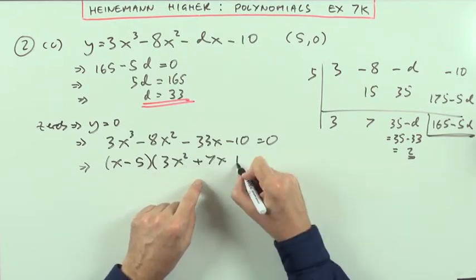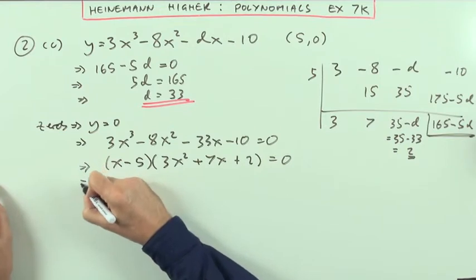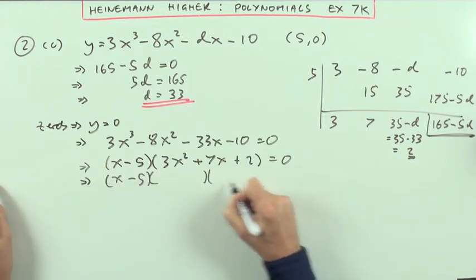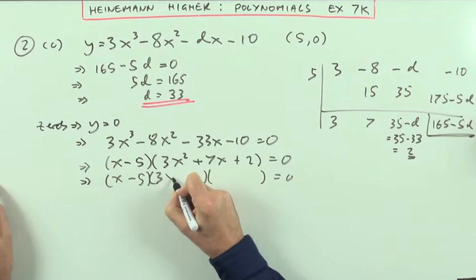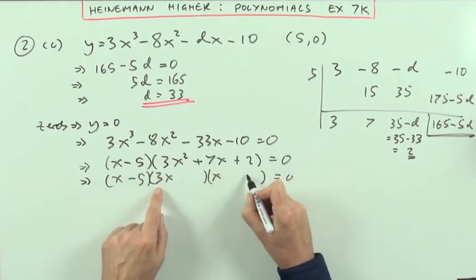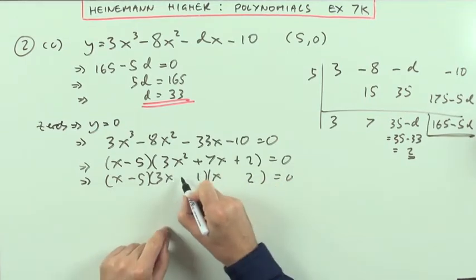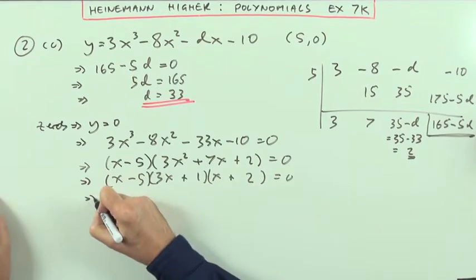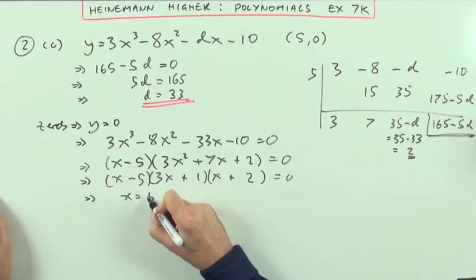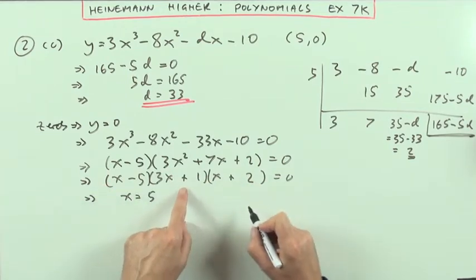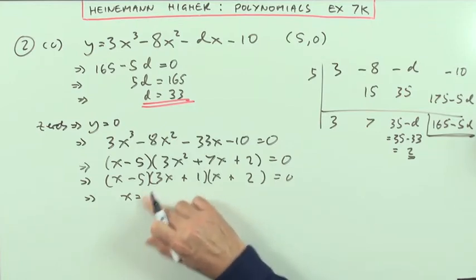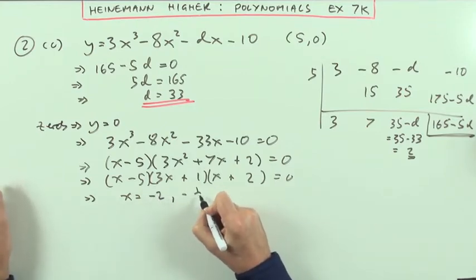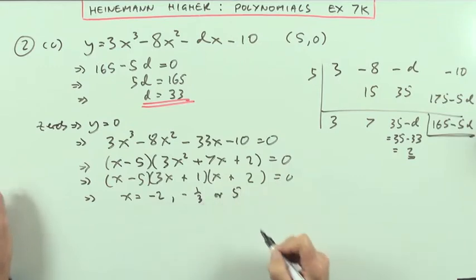Which by the nature of the question must factorise, so that must be 3x and x, and then that will be a 6 and a 1 to make the 7, and they're all positive, which gives me the answers: x equals 5, or negative a third, or negative 2. Maybe I'll put them in order, so I've got negative 2, negative one third, or five.